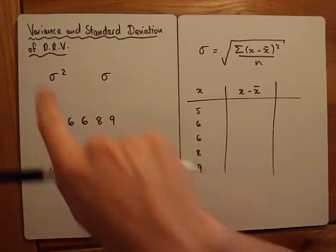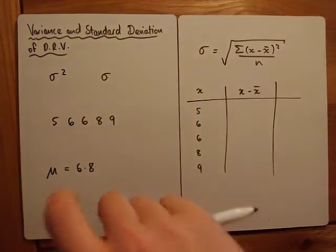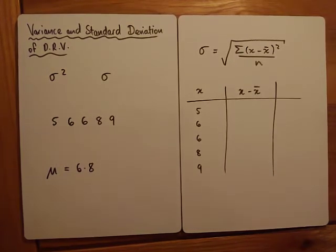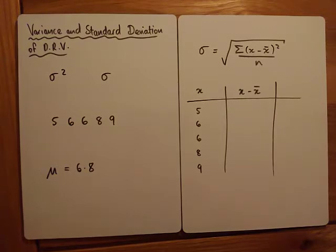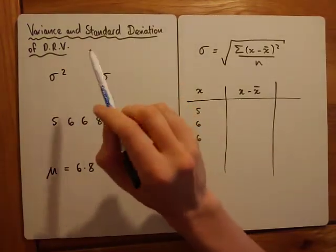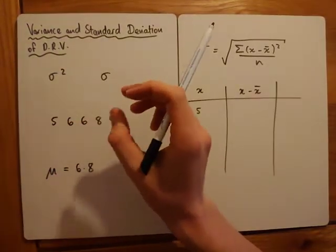In this video we're going to look at how to find the variance and standard deviation for a discrete random variable. Before we do, we need to think about what variance and standard deviation actually are — this might be a recap for some of you. Variance and standard deviation are a measure of how spread out the data is — it's called a measure of spread.